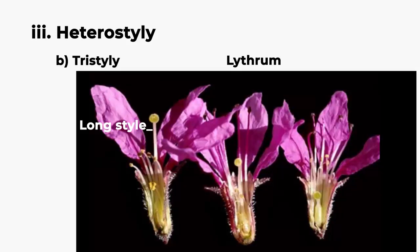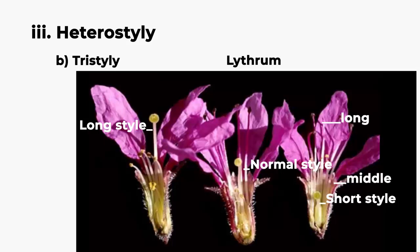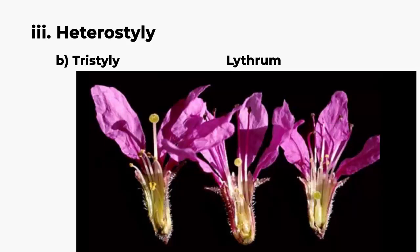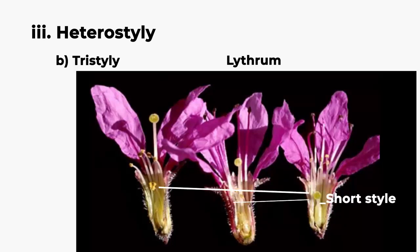The three forms are long style, normal style, and short style. The long style flower has short and middle stamens. The normal style flower has long and short stamens. The short style flower has long and middle stamens. Pollination occurs between the sex organs of the same length — so the long style flower gets pollinated by flowers with long stamens, the normal style by flowers with middle stamens, and the short style by flowers with short stamens.